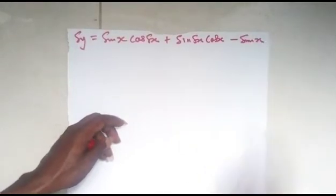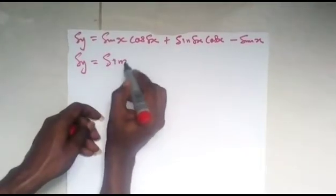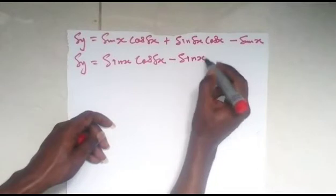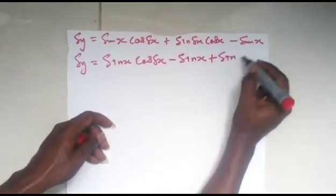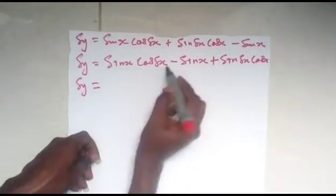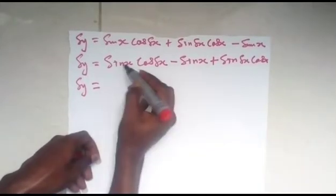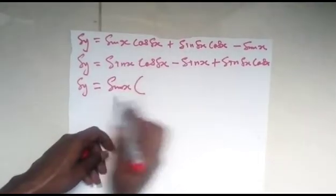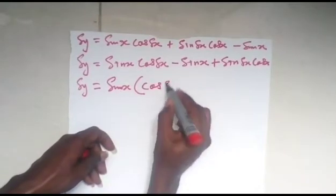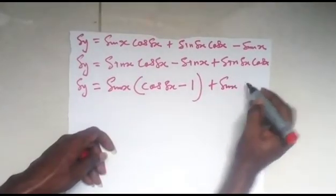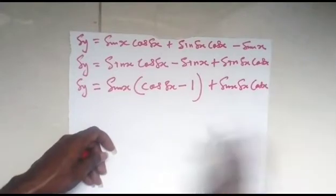We now have that δy equals sin x cos(δx) plus sin(δx) cos x minus sin x. From this, we can see that δy equals sin x cos(δx) minus sin x plus sin(δx) cos x. Collecting like terms by factorization, sin x is common, so we take one sin x out: sin x times (cos(δx) minus 1) plus sin(δx) cos x.